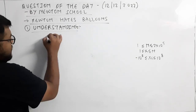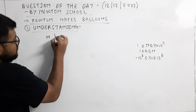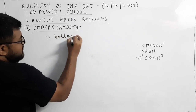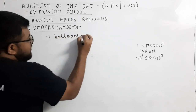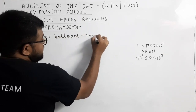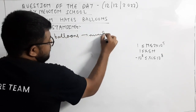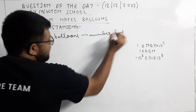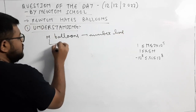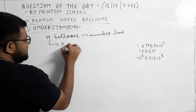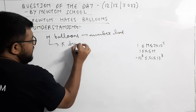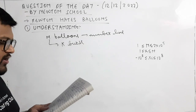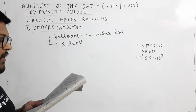ठीक है, क्या बोला गया है, कि total N balloons है, किसी number line पे, मतलब कि कोई एक axis पे होगा, ठीक है X axis पे, और Newton को balloons अच्छे नहीं लगते हैं, इसलिए इसमें से exactly K balloons Newton को burst करने हैं।